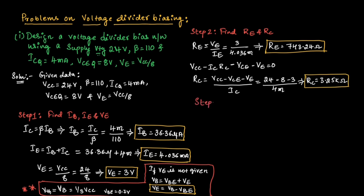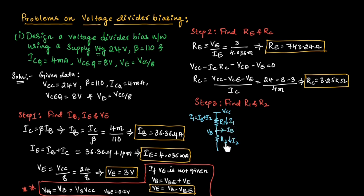In step 3, let us find the value of R1 and R2. Considering the circuit at the input side, we have resistors R1 and R2 with corresponding currents I1 and I2. At the base terminal, we have current IB, so current I1 equals IB plus I2. First, let us find the value of VB. VB equals VE plus VBE, which gives 3 plus 0.7 volts. Therefore, VB equals 3.7 volts.